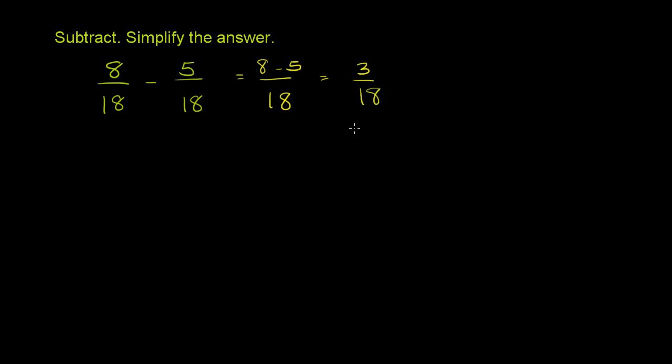That's the answer, but it's not completely simplified because both 3 and 18 are divisible by 3. So let's divide them both by 3.